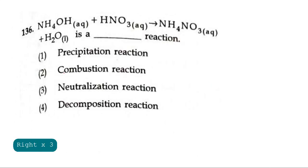Question 136: Ammonium hydroxide in reaction with nitric acid gives ammonium nitrate and water. They have asked which kind of reaction is this. Generally ammonium hydroxide is a base and nitric acid is an acid. NH4NO3 is a salt, ammonium nitrate, and H2O is water. An acid and a base will neutralize to give salt and water, and this reaction is called neutralization reaction. The correct answer is option 3.